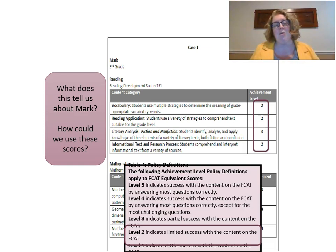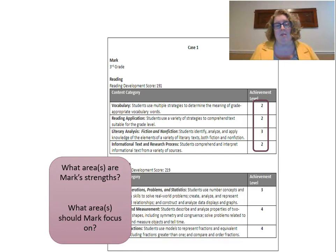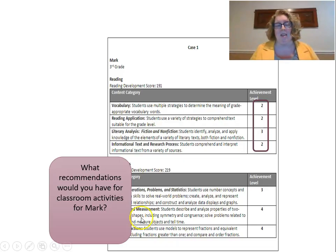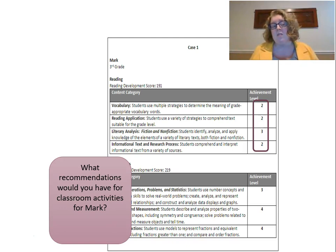Reading instructors can think about what those scores mean and develop specific classroom strategies to help Mark be a better reader. When looking at FSA scores, this is where you'll get those classroom applications for your case study examples. You can do the same thing in the math section for Mark — look at the development score in math and his relative strengths and weaknesses. When thinking about those development scores, the norm-referenced and criterion-referenced scores, focus on the classroom applications from the FSA and EOC scores, and also his grades on the report cards.